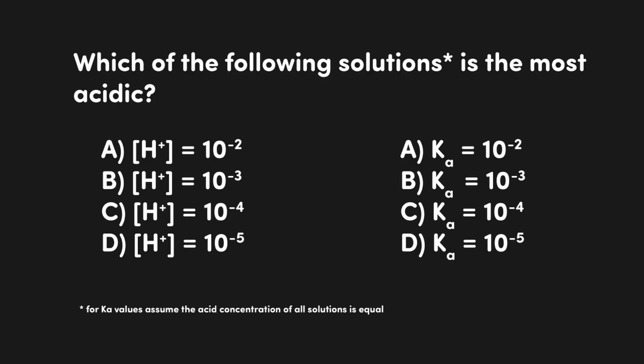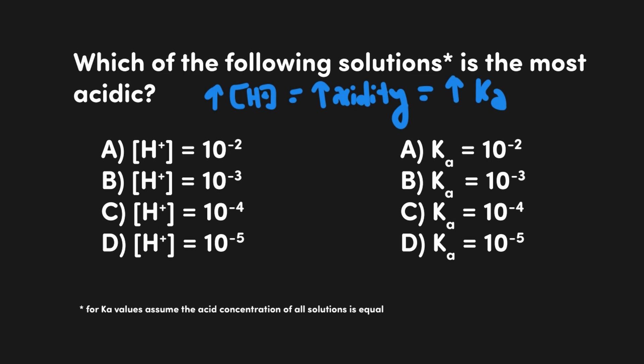This first question asks: which of the following solutions is the most acidic? So we need to know how acidity is measured, and typically that's just by the H+ concentration — the higher the H+ concentration, the more acidic the solution. When we're looking at the answer choices showing H+ concentrations, we would look for the largest number, which is A. And since we can equate Ka and H+ concentrations, we know that we're looking for the largest Ka number as well, which is also A, and that would correspond with the most acidic solution.